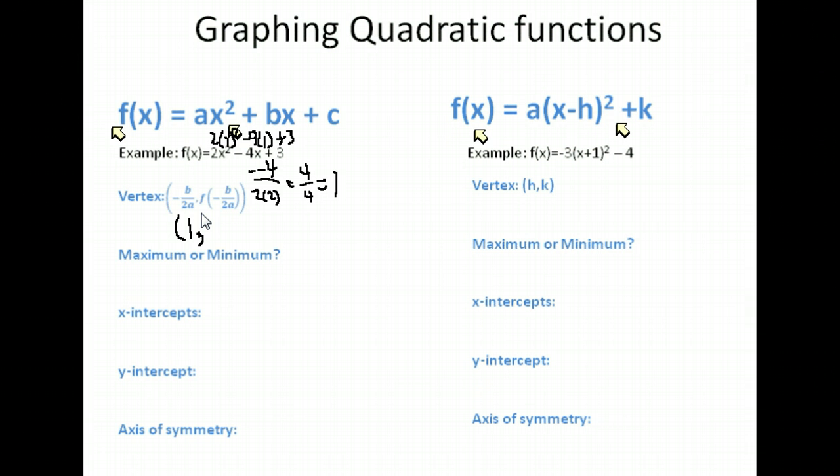Be very careful with your order of operations. Remember, squaring comes before multiplication. So we square the 1. 1 squared is 1. Times 2 is 2. Negative 4 times 1 is negative 4. So we have 2 minus 4 plus 3. What do we get from that? I'm getting a 1. So our vertex is at 1, 1.